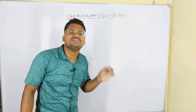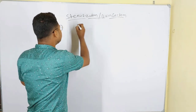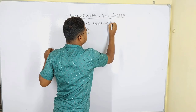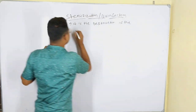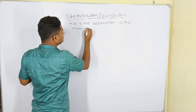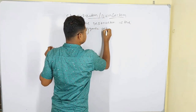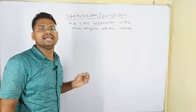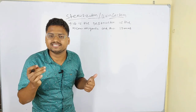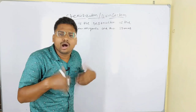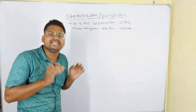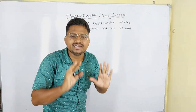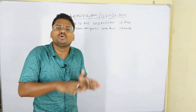Sterilization means it is the destruction of the microorganism and their spores. Disinfection means it is being free from microorganisms. We can use chemicals for the purpose of disinfection to clean the area.